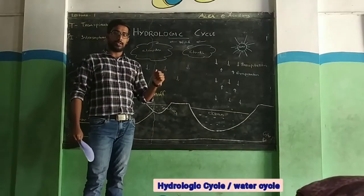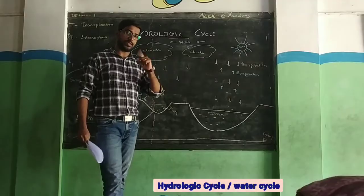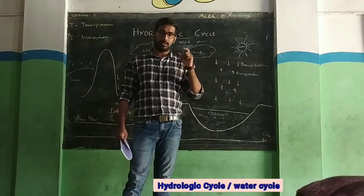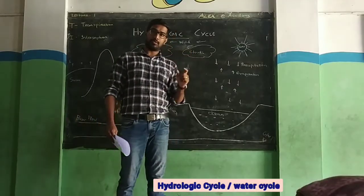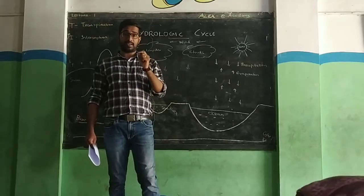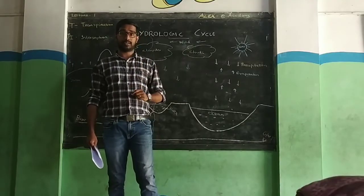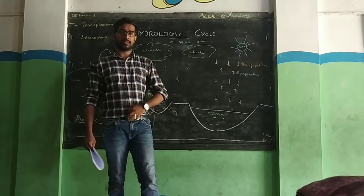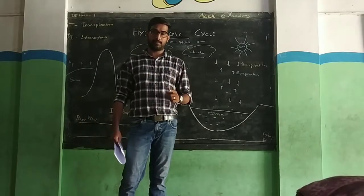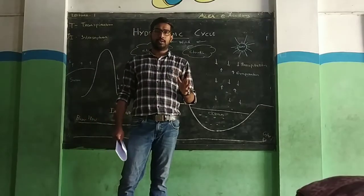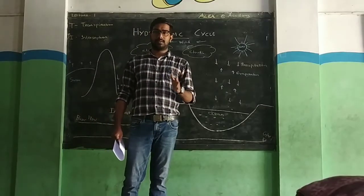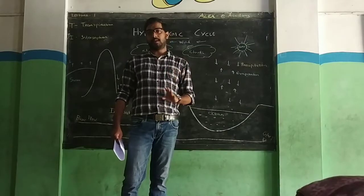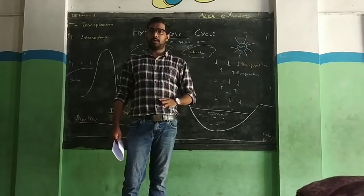This is a topic related to an exam question. The Hydrologic Cycle defines or explains the hydrologic cycle with needs. Usually, universities will repeat this type of question. Usually five, six, or seven marks. This is the answer, and it has mainly three parts.